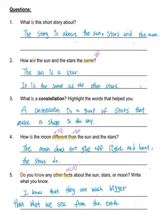Three. What is a constellation? It's in the passage, right? You can just write it down. A constellation is a group of stars that make a shape in the sky.